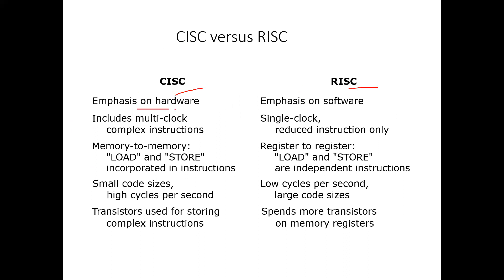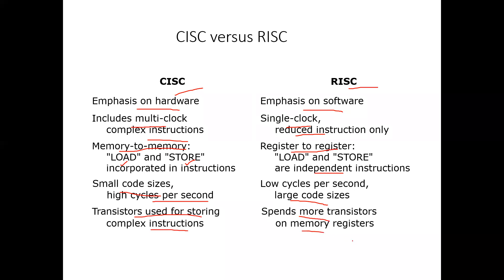The key differences between CISC and RISC: CISC emphasizes hardware; RISC emphasizes software. CISC uses multi-clock instructions; RISC uses single-clock instructions. CISC has complex instructions; RISC has reduced instructions. CISC uses memory-to-memory load/store incorporated in instructions; RISC uses register-to-register operations independently. CISC has small code sizes with high cycles per instruction; RISC has large code sizes with low cycles per instruction. CISC uses transistors for storing complex instructions; RISC spends more transistors on memory registers.